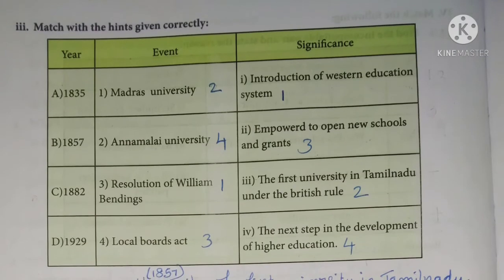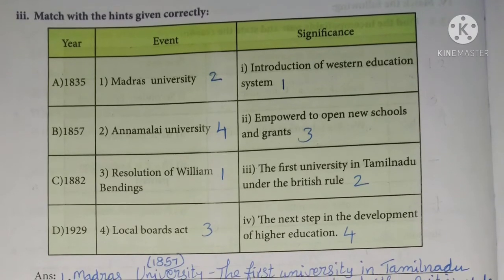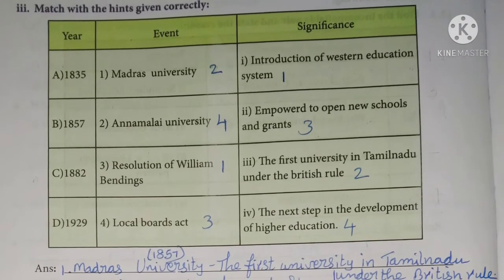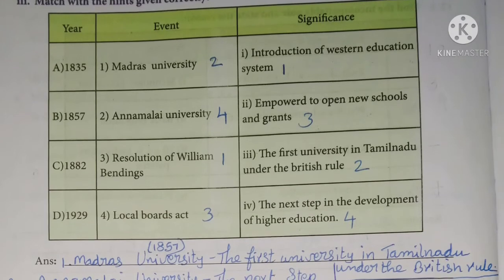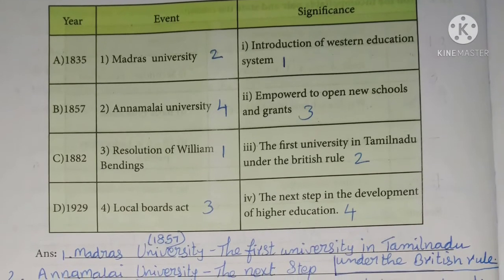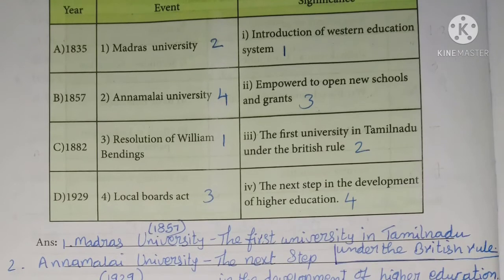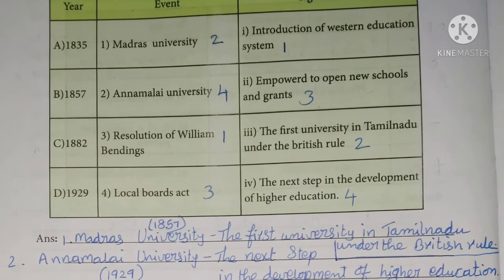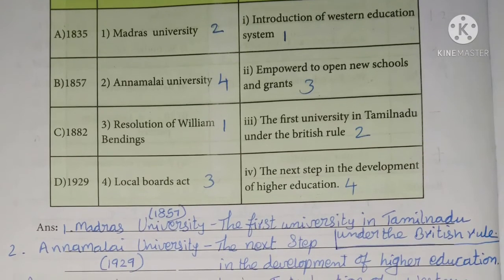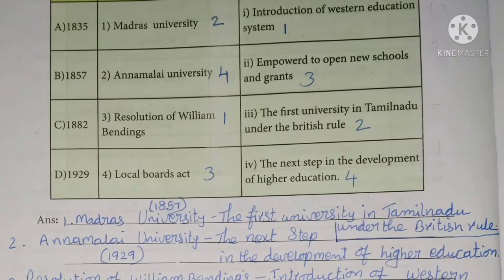An exposed match with the items given correctly. Here I have written the correct match answers. First one: Madras University, 1857 — the first university in Tamil Nadu under the British rule.